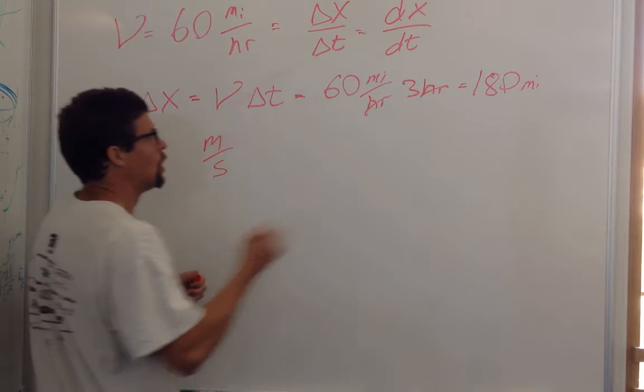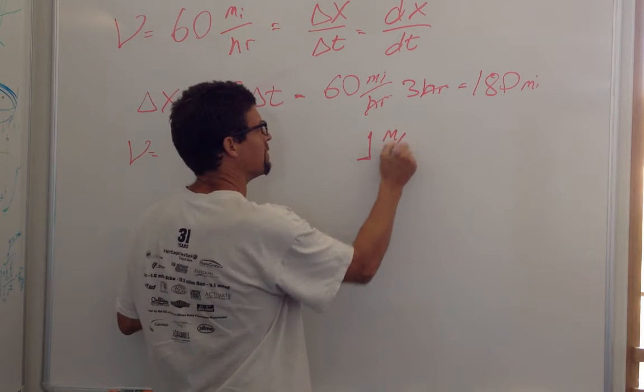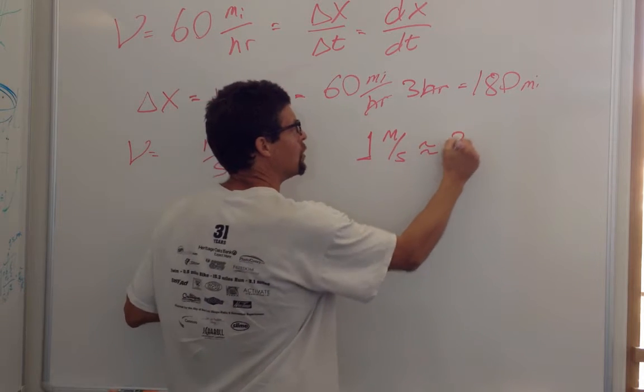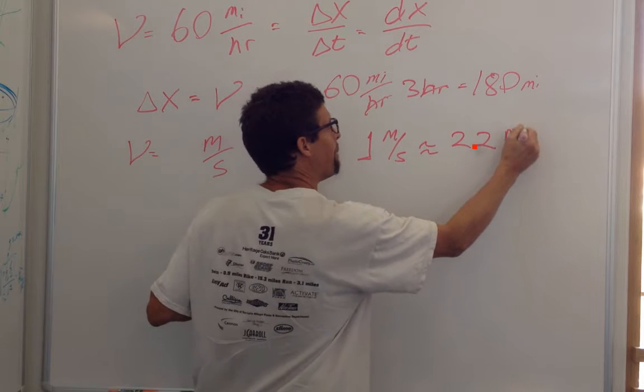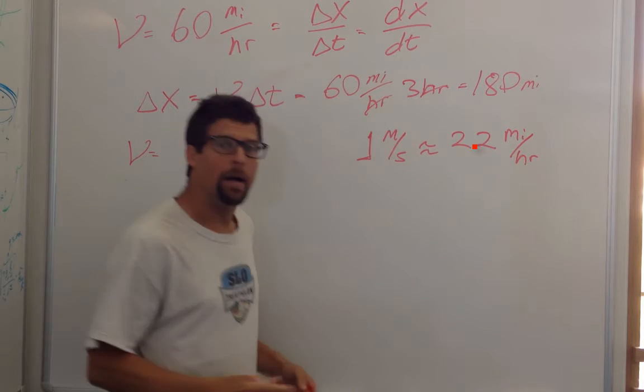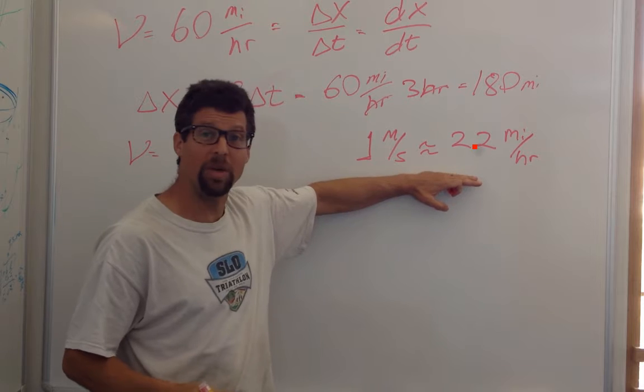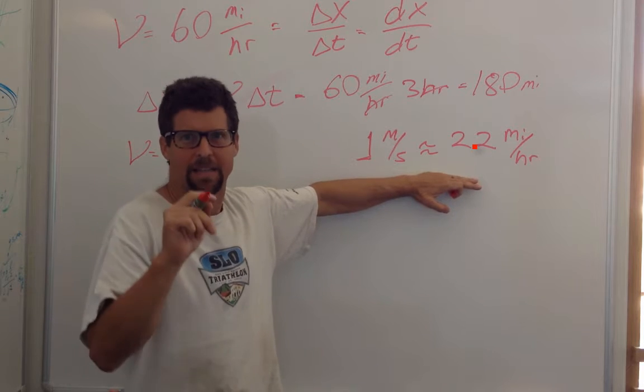It turns out one meter per second is about 2.2 miles an hour. Now, be prepared to show me this is the case mathematically in class tomorrow.